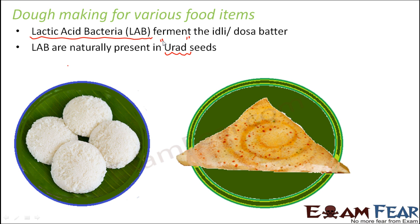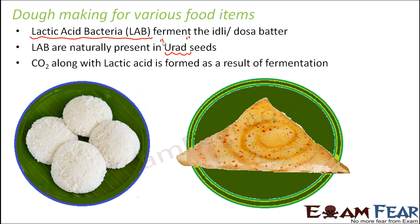Since lactic acid bacteria are naturally present in the urad seeds, as soon as you grind and mix rice with urad, the bacteria start the process of fermentation. As a result of fermentation, lactic acid is formed — because they are lactic acid bacteria — but along with lactic acid, carbon dioxide is also formed. Due to the formation of carbon dioxide, fluffiness and puffiness come in, and that is how the idli batter gets fermented.